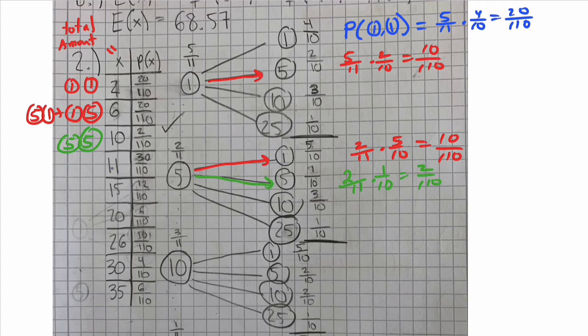Next, we can get eleven cents if we pull out a ten-cent coin and a one-cent coin, or a one-cent coin first and then a ten-cent coin. So that is here and here. This one is five-elevenths times three-tenths is 15 over 110. And over here, we've got also 15 over 110. So all together, it's 30 out of 110.